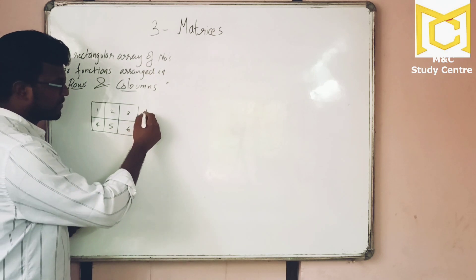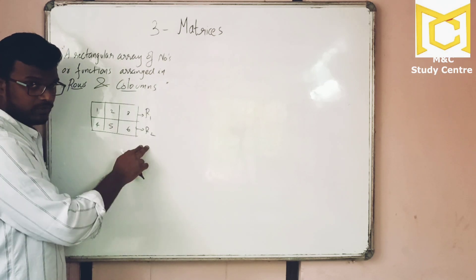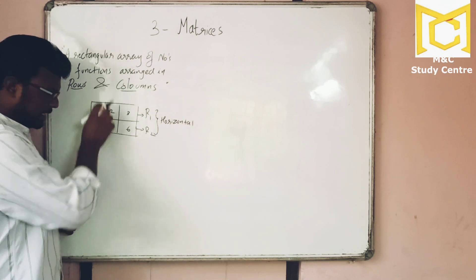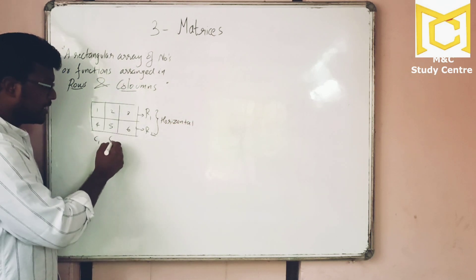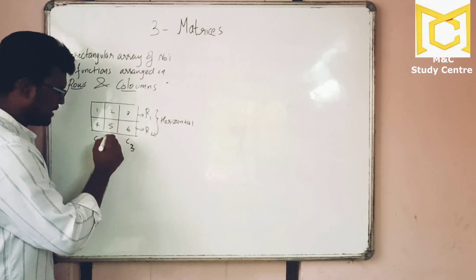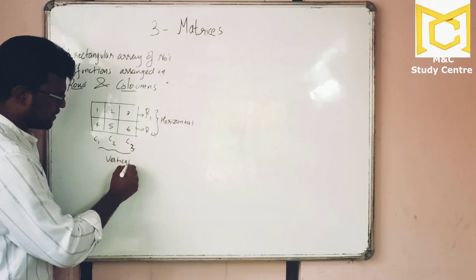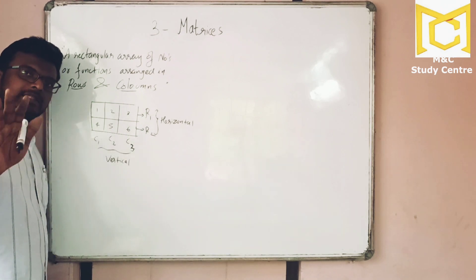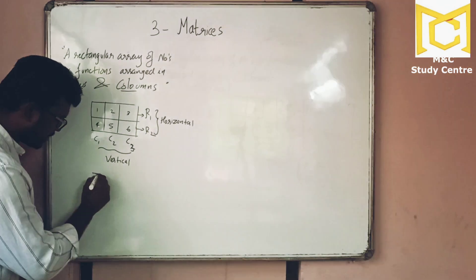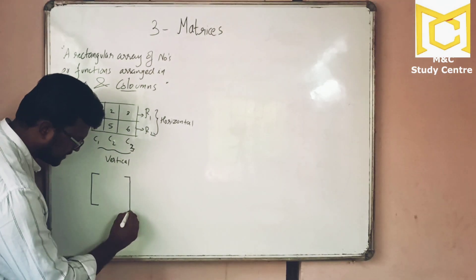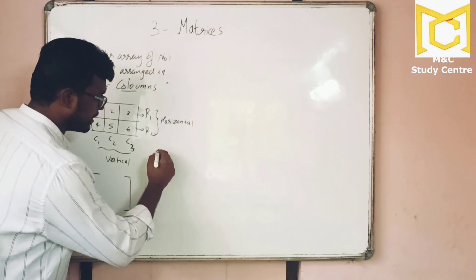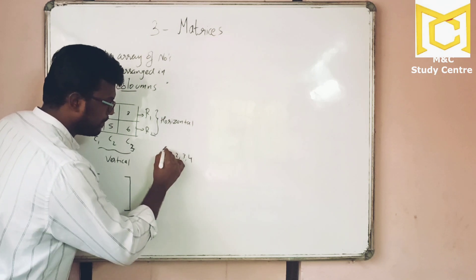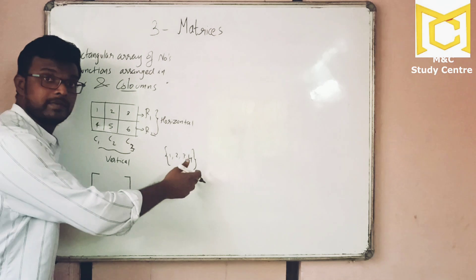This is the first row, R1, then R2 — two rows. You take all the rows, which are the horizontal elements. The vertical elements are the columns: C1, C2, and C3. This concept — horizontal for rows and vertical for columns — is very important. A matrix is represented inside a rectangular square bracket.